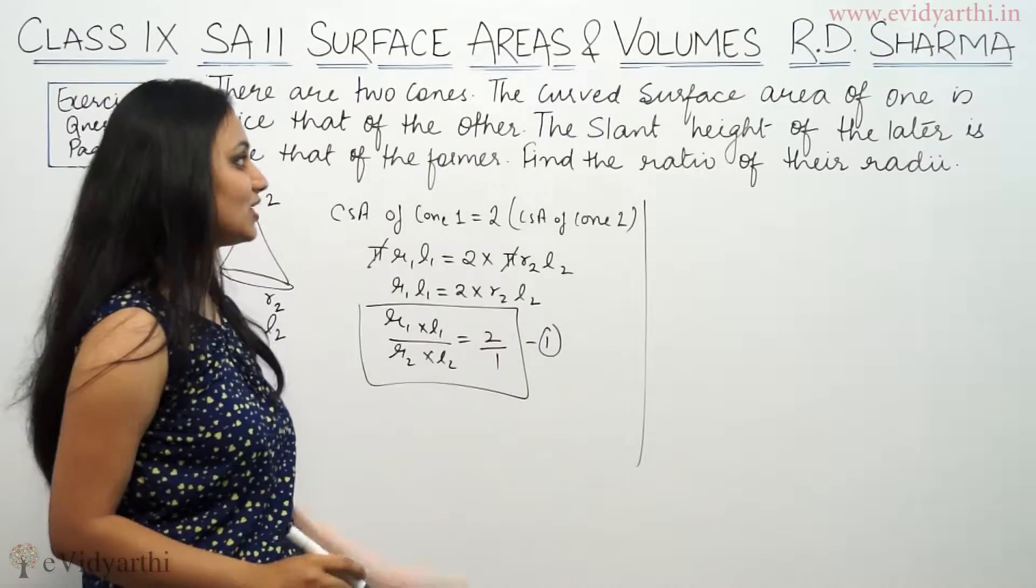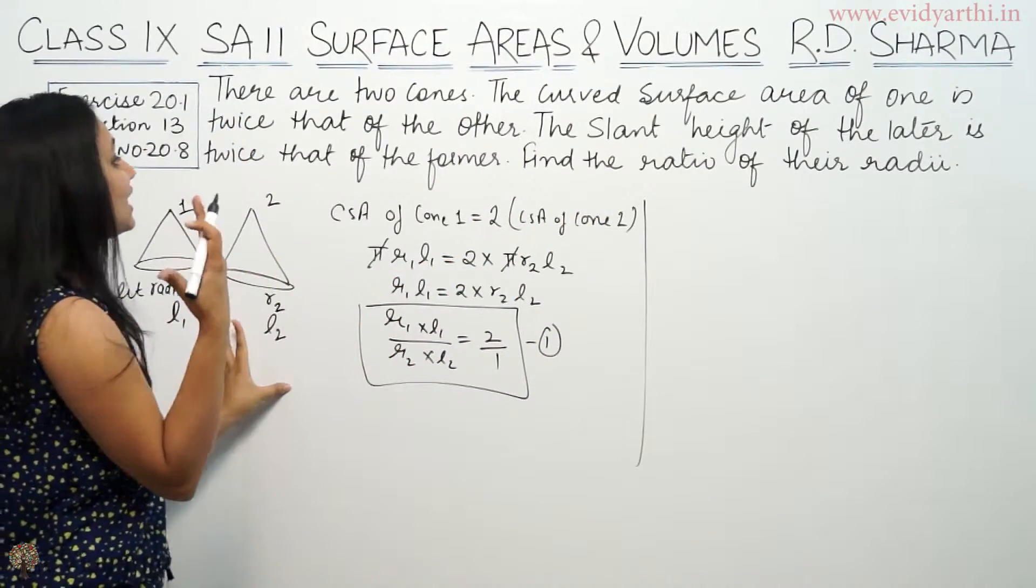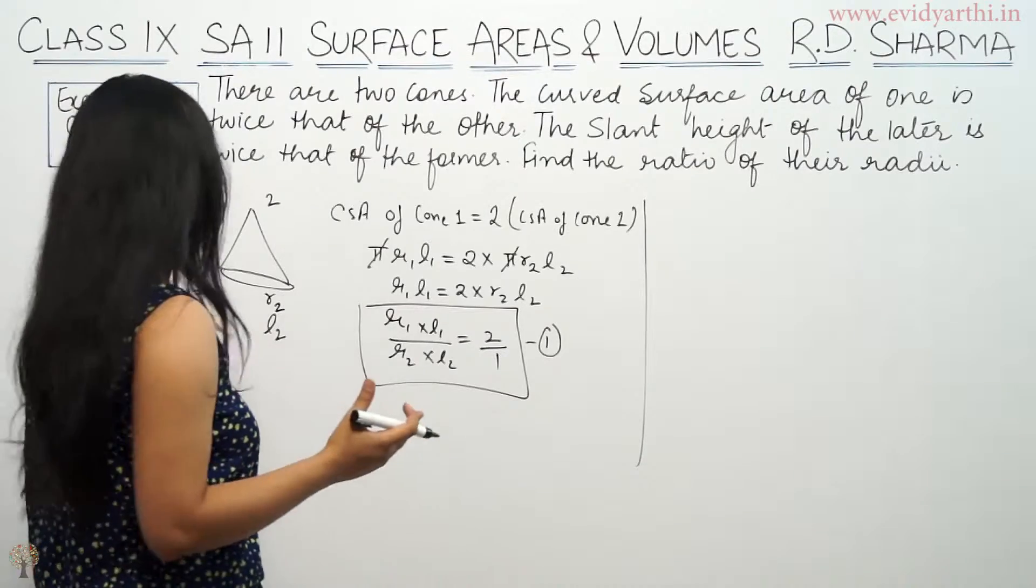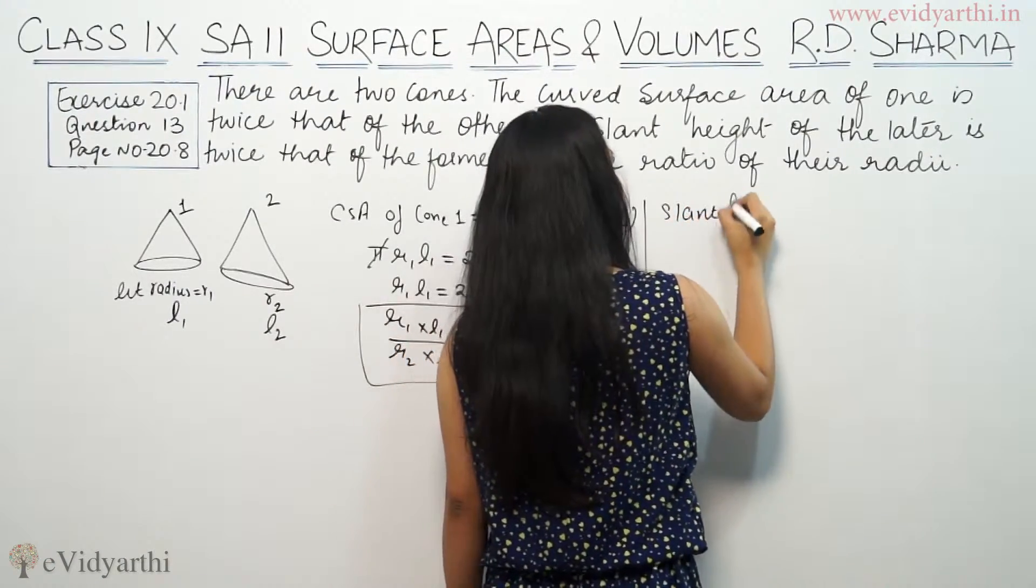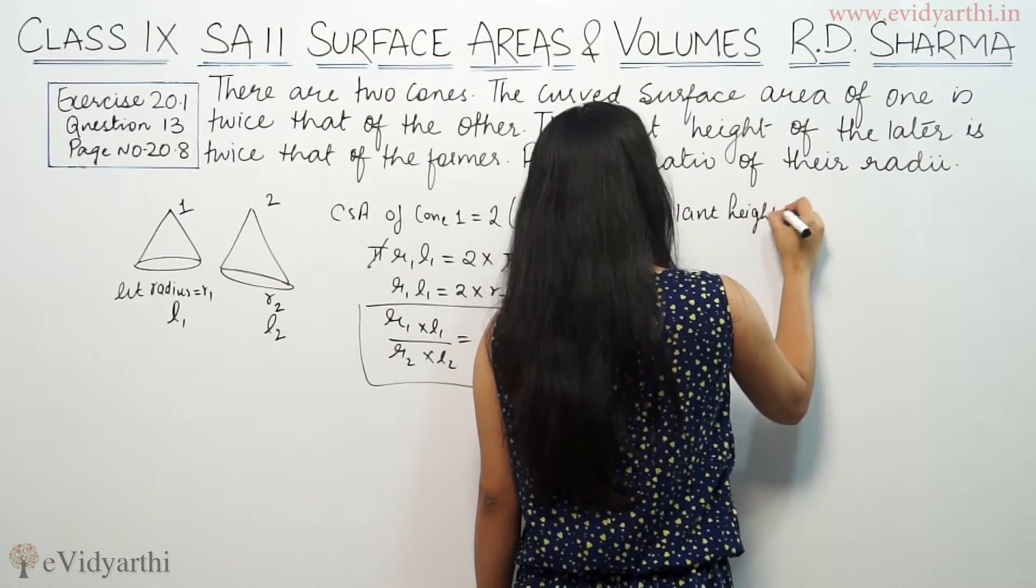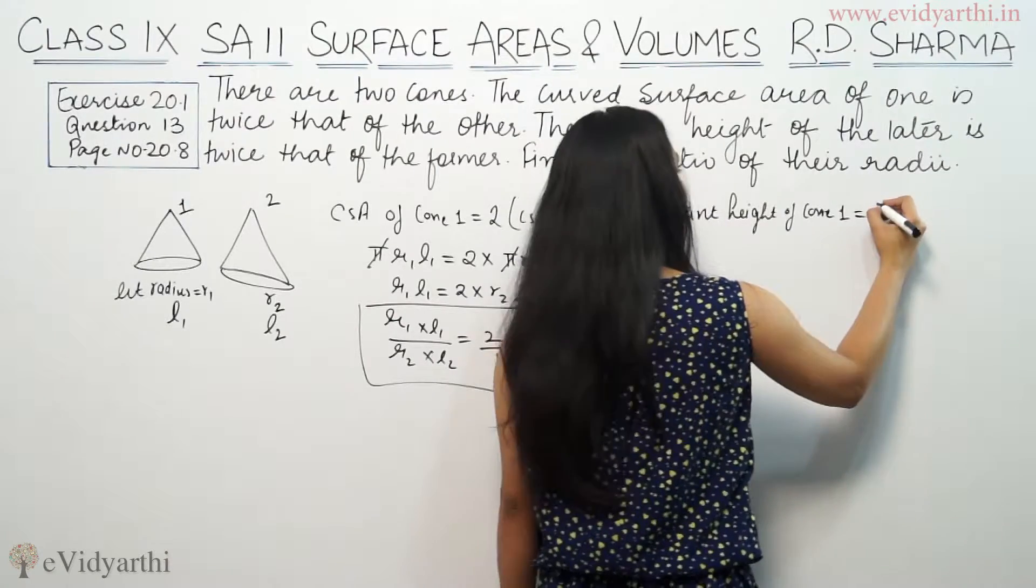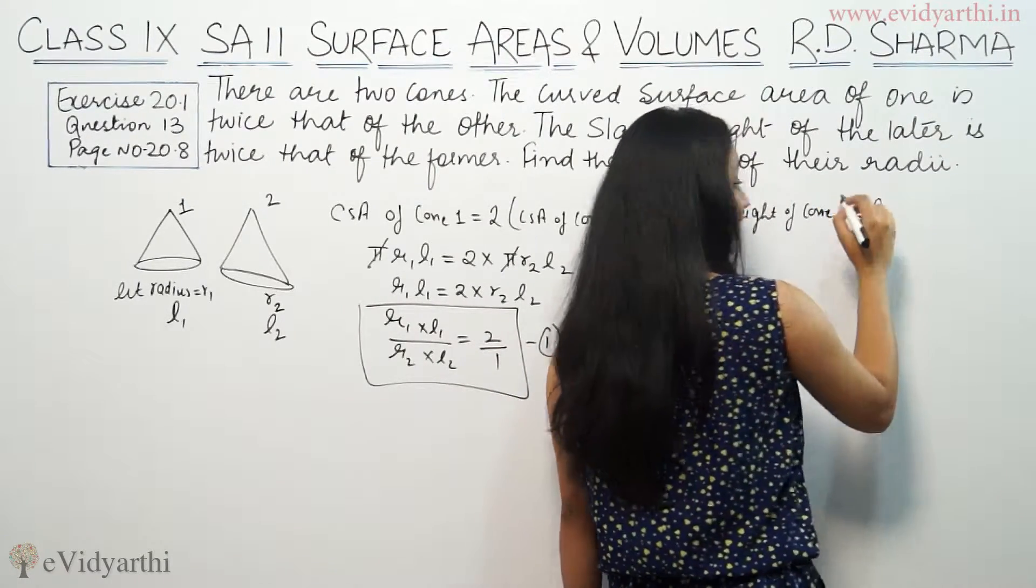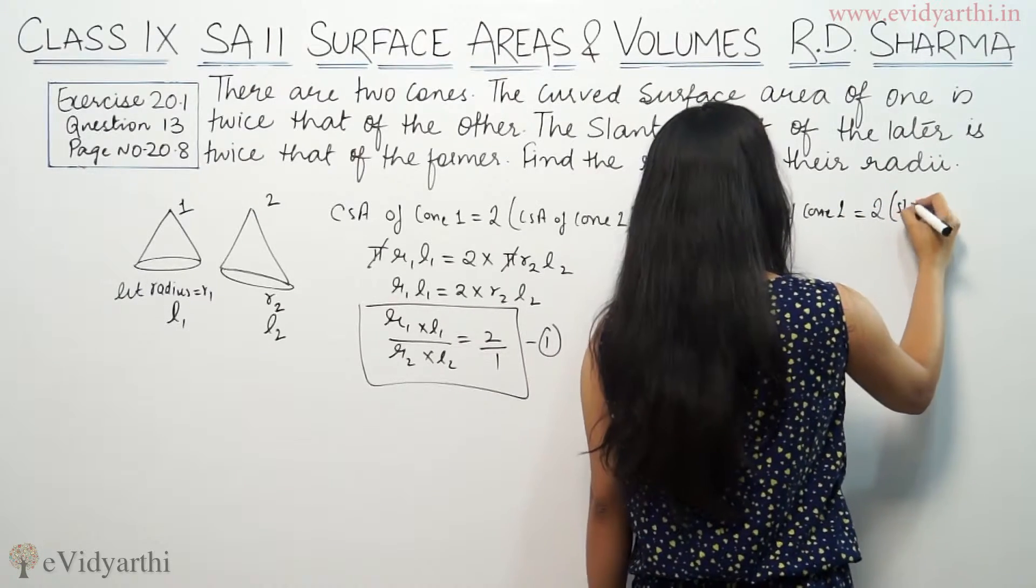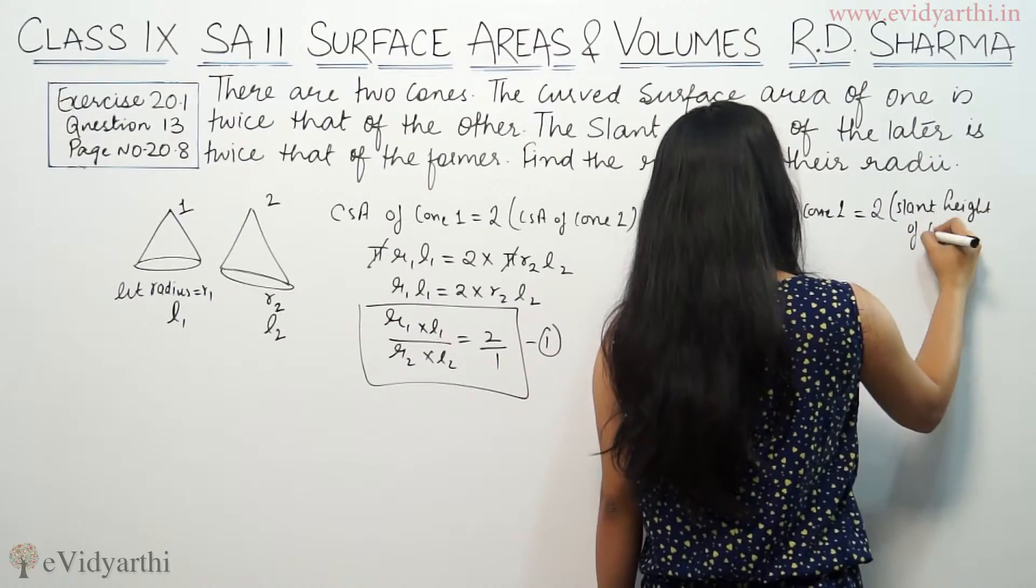Now, second equation. The slant height of the latter is twice that of the former, the first one is twice. So we are given, slant height is twice. So we are given, slant height of cone 2 is twice the slant height of cone 1.